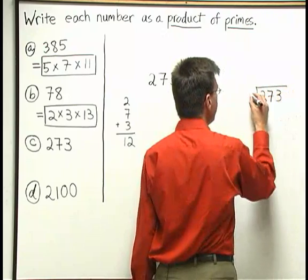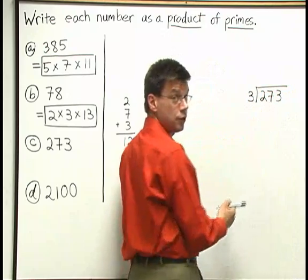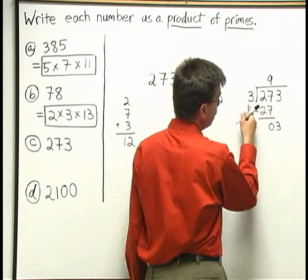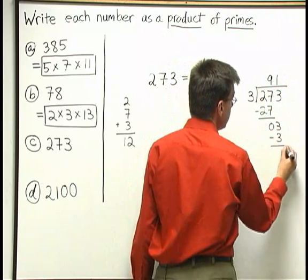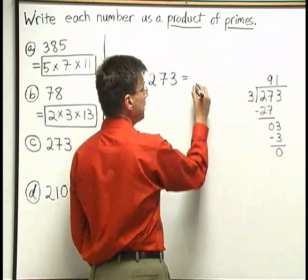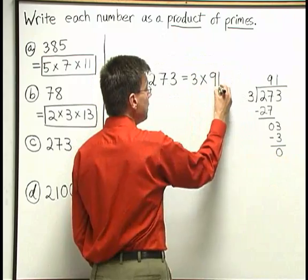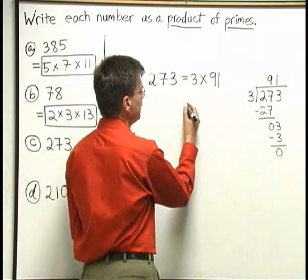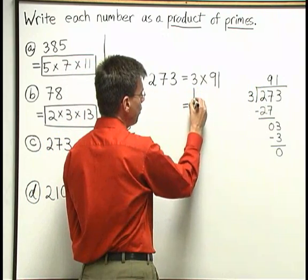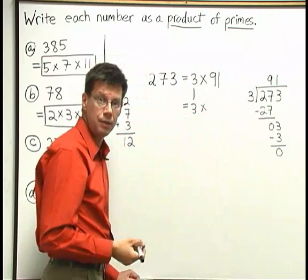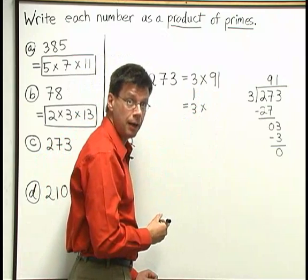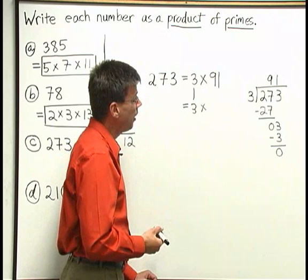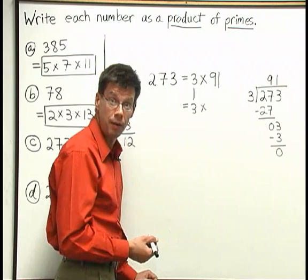We know 3 is going to go in — let's see what we get. 3 doesn't go into 2. 3 goes into 27 nine times. 9 times 3 is 27. Subtract, I get 0. Bring down the 3. 3 goes into 3 once. 1 times 3 is 3. Subtract, I get 0. So what I got here to get started is 3 times 91 — 3 times 91 is 273. Now, if 91 was a prime number we'd be done, but it's not so easy to tell if a number is prime when it's as large as 91. I've got to try dividing numbers into it and see if I can find one that goes in evenly.